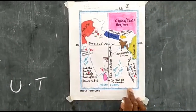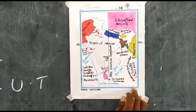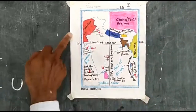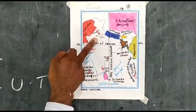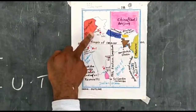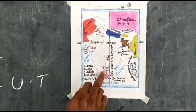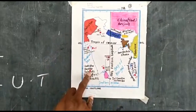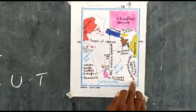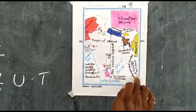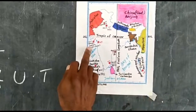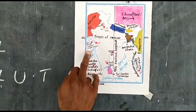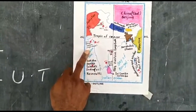Coming to union territories — there are 7 union territories: Delhi, Chandigarh, Pondicherry, Lakshadweep, Andaman and Nicobar Islands, Diu, and Daman and Dadra and Nagar Haveli. These are the 7 union territories.